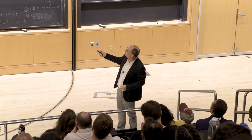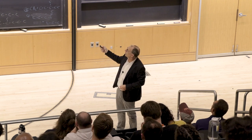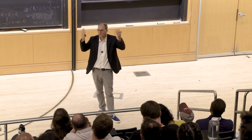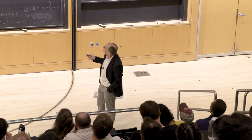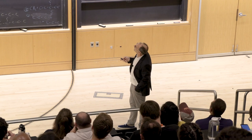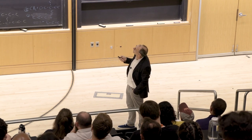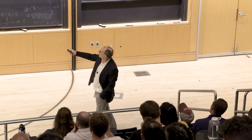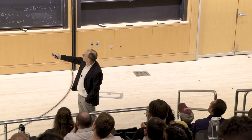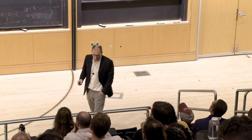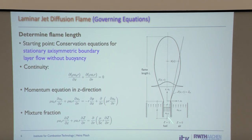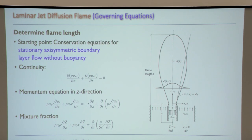In zero gravity there's no flow — only diffusion. Oxygen diffuses into the flame, but there's no flow from behind, so you get less and less oxygen and the flame goes out by itself. That's actually a strategy for firefighters in space. For the laminar diffusion flame, we can write the governing equations — continuity, momentum, and the mixture fraction equation — in a cylindrical coordinate system, giving a 2D set of equations.